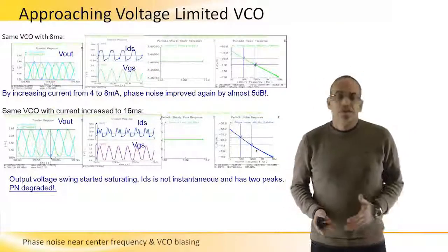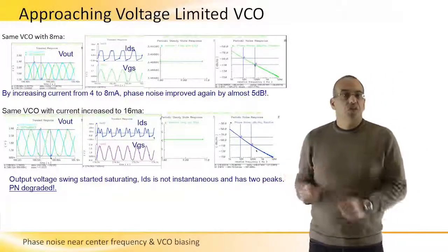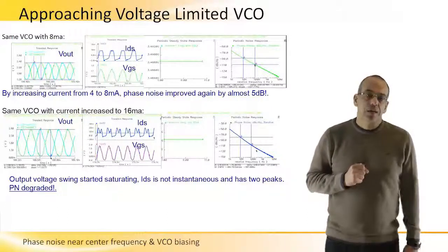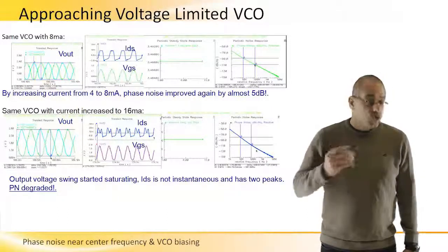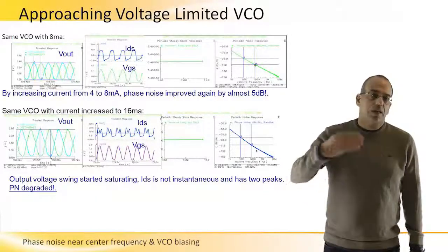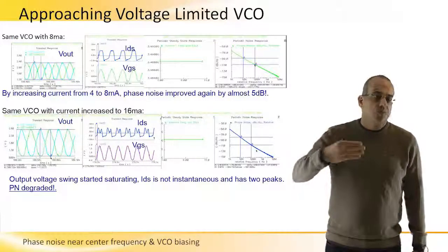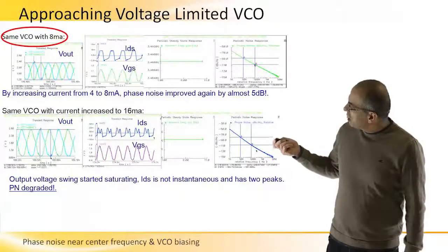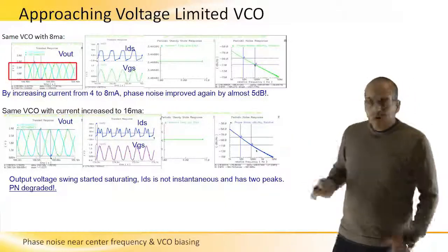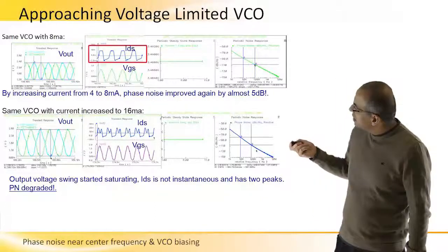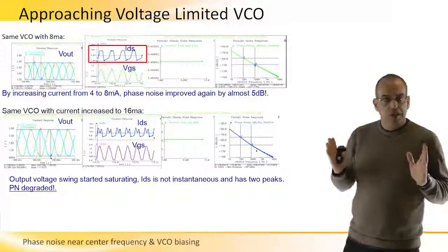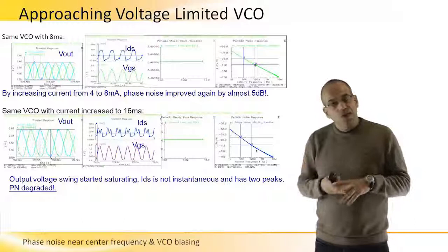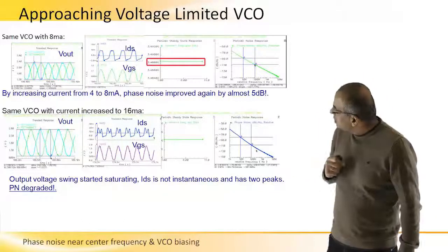We have seen that doubling the current in the current-limited mode improves phase noise by 6 dB. Continuing to increase current, at 8 mA the output voltage is almost doubling still. However, looking at IDS, it starts clipping — the current injection occupies a bigger portion of the oscillation period, injecting more noise and slightly steepening the 1/f³ slope. The phase noise still improves by about 5 dB.